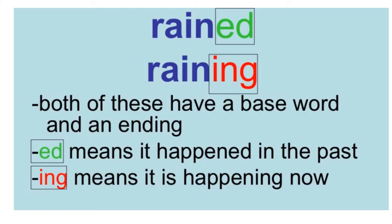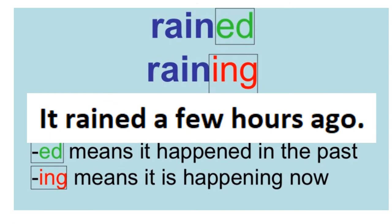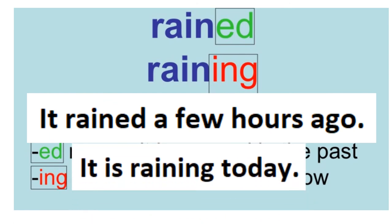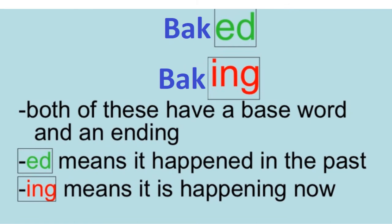जैसे 'rain' base word है — 'rain' का मतलب है बारश हुई थी, और 'raining' का मतलब है बारश हो रही है। दोनों में एक base word है और एक ending। '-ed' means it happened in the past, और '-ing' means it is happening now. 'It rained a few hours ago' — कुछ घंटे पहले बारश हुई। 'It is raining today' — आज बारش हो रही है। इसी तरह 'bake' — oven میں کسی چیز کو پکانا — 'baked' مطلب پکایا، 'baking' مطلب ابھی پکا رہا ہے۔